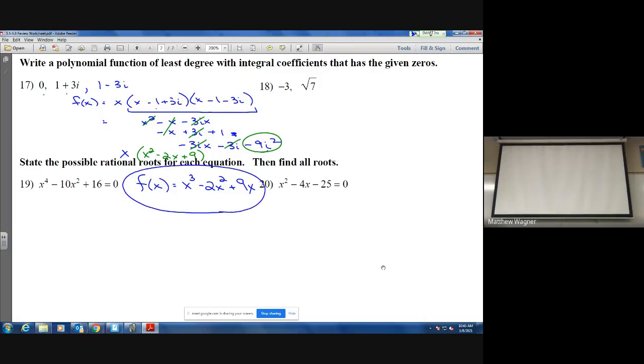It said integral coefficients. Keep in mind, if it did say we wanted the coefficient to be say like a 3, all we'd have to do is multiply everything by 3. So we'd have 3x cubed minus 6x squared plus 27x. That's how we get our function of least degree with a leading coefficient of 3. Otherwise, it's just that same problem: set up your factors, distribute, and simplify from there.